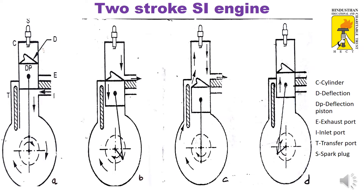In position C the piston is at BDC, and in position D it is moving upward. When the piston is at position A, the inlet port is uncovered. Comparing atmospheric pressure with the lower crankcase pressure, the air-fuel mixture enters the bottom of the casing. Similarly, at the top of the cylinder, the air-fuel mixture is being compressed.